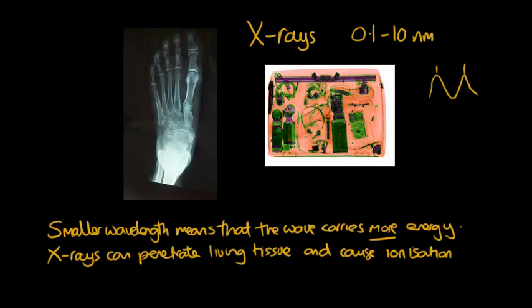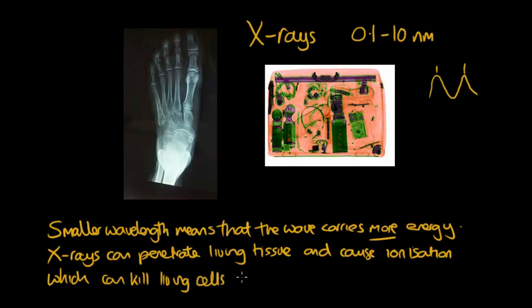Ionization is when an electromagnetic wave knocks an electron or two out of an atom and causes that atom to become charged. And that can create unwanted chemical reactions. So x-rays can penetrate living tissue and cause ionization, which can kill living cells or cause unwanted cancerous changes.